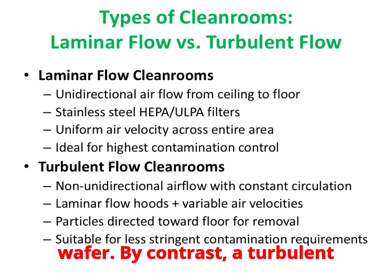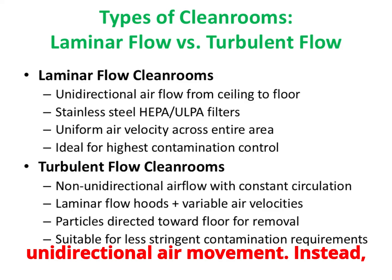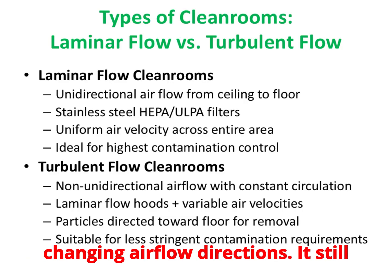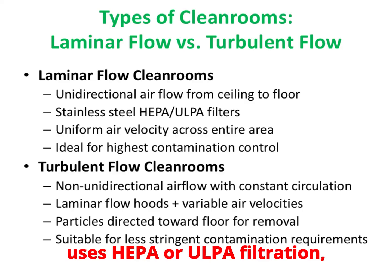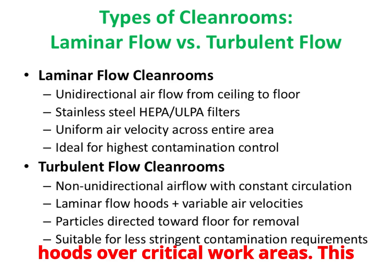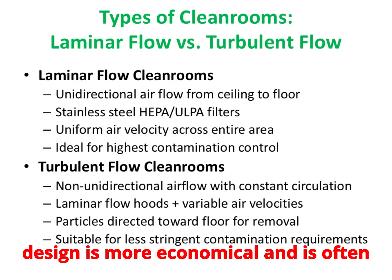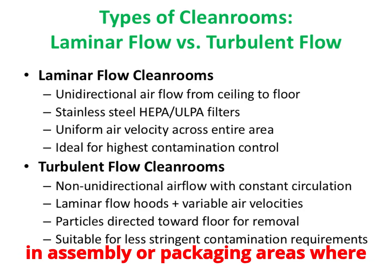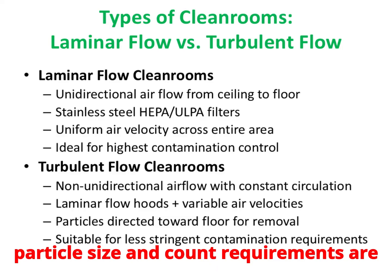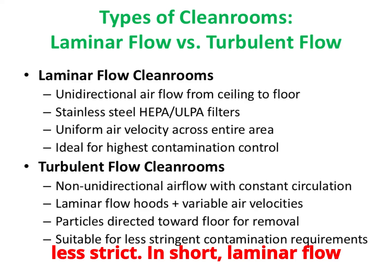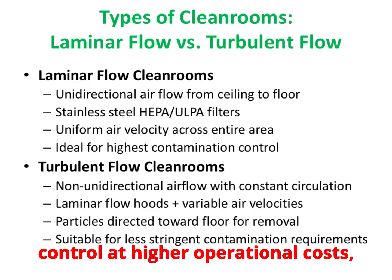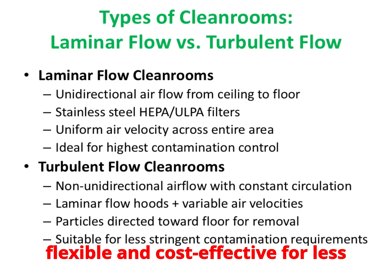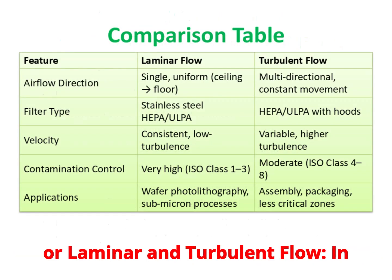By contrast, a turbulent flow clean room does not rely on unidirectional air movement. Instead, it maintains constant circulation with changing airflow directions. It still uses HEPA or ULPA filtration, but often with localized laminar flow hoods over critical work areas. This design is more economical and is often used for processes with lower contamination sensitivity — for example, in assembly or packaging areas where particle size and count requirements are less strict. In summary, laminar flow clean rooms provide extremely high control at higher operational costs, while turbulent flow clean rooms are more flexible and cost-effective for less critical environments.